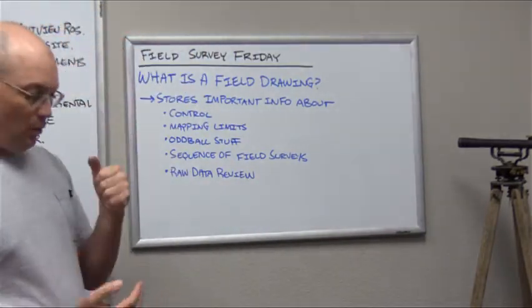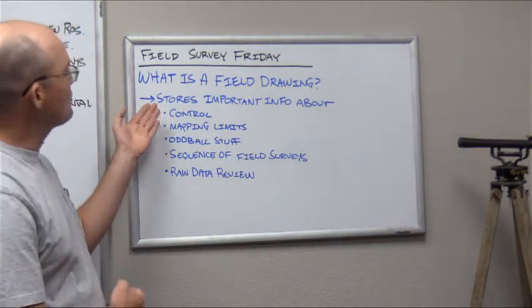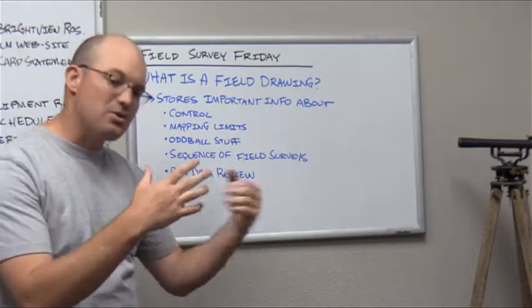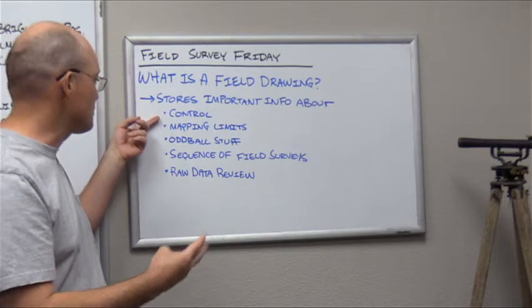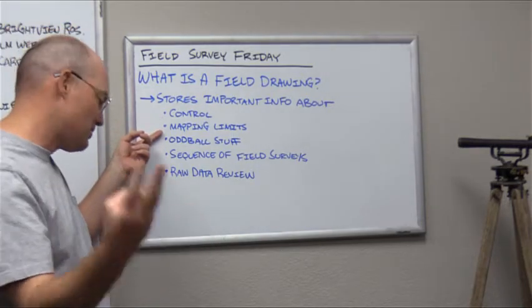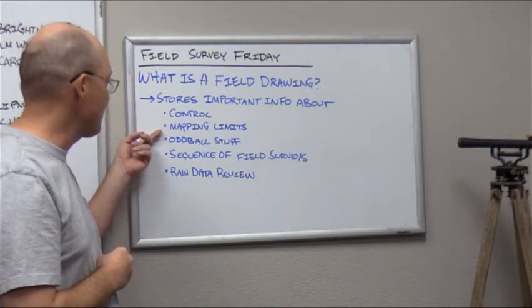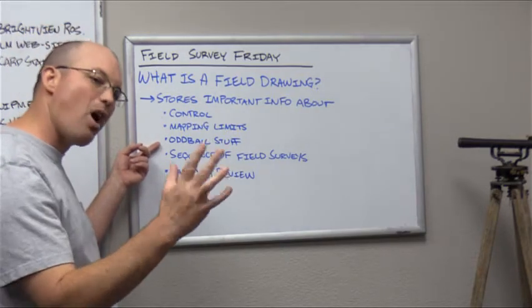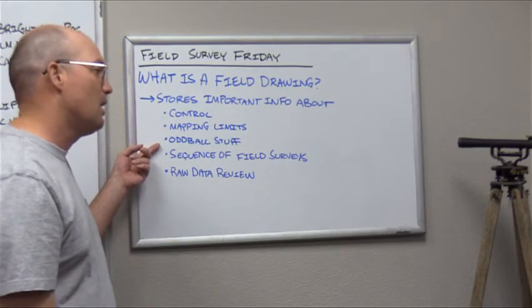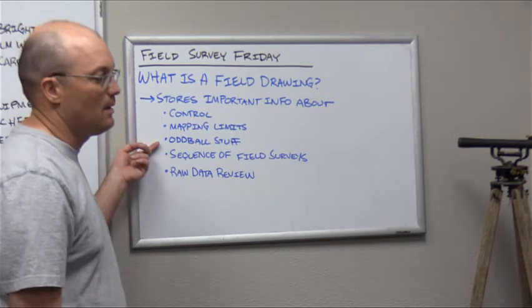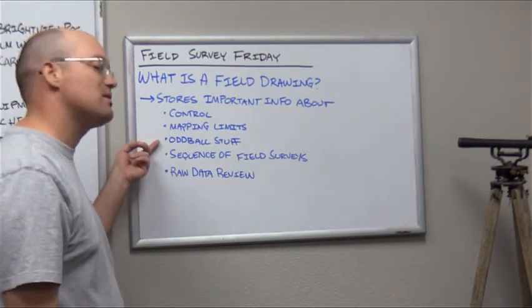So what is a field drawing? A field drawing at Redefine Horizons stores important information about your field work. That includes information about your control, what exists, what's been destroyed, mapping limits. So the mapping limits from the scope of work, and then the mapping limits of each field survey that you've done, kind of oddball stuff. There was a car parked on top of a manhole, you couldn't dip it. You saw some utility paint that you didn't expect to see. Just kind of weird stuff that happens on field surveys that gets noted in the drawing.